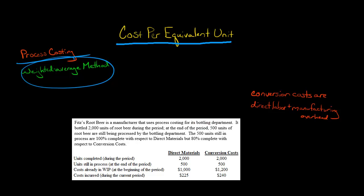The bottling department bottled 2,000 units of root beer during the period, and then at the end of the period, they still have some root beer that is not completely finished.